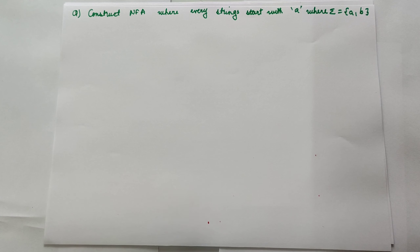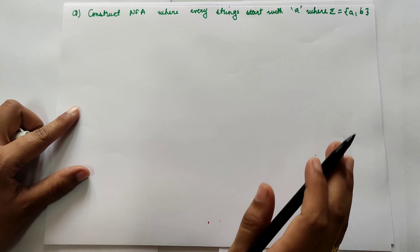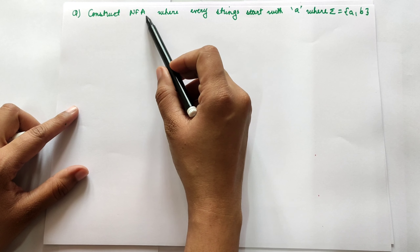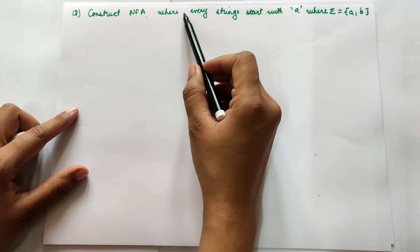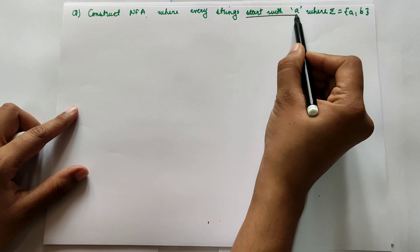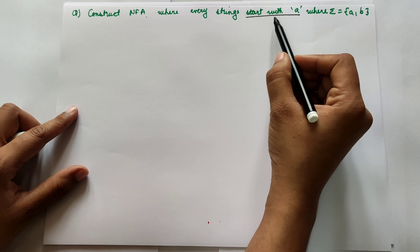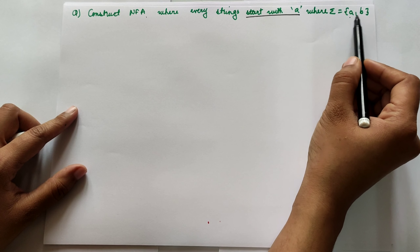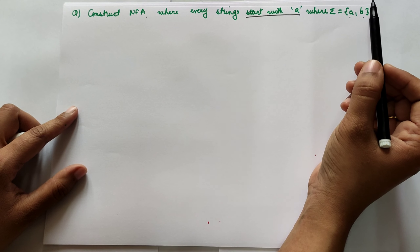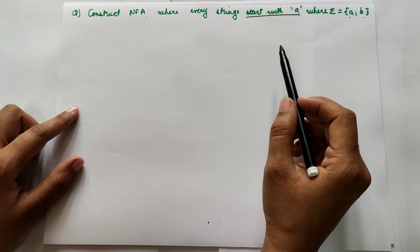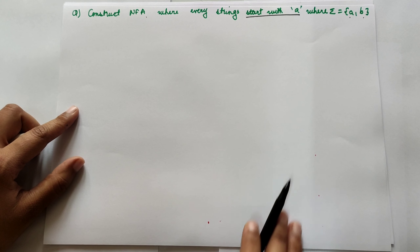We will see one more example of non-deterministic finite automata, where we have to construct an NFA where every string starts with an A. The condition is that it starts with an A for the given input alphabet A and B. We will try to make the non-deterministic finite automata for this given language.